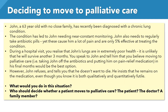Let's talk about an actual scenario. John, a 63-year-old with no close family, has recently been diagnosed with a chronic lung condition. The condition has led to near-constant monitoring and John also needs to regularly take antibiotic pills. However, these cause him a lot of pain and are only 5% effective at treating the actual condition. During a hospital visit you realise that John's lungs are in extremely poor health — it is unlikely that he will survive another three months. You speak to John and tell him that moving to palliative care — taking him off the antibiotics and putting him on pain relief medication — is in his best interests. However, John refuses and tells you that he doesn't want to die. He insists that he remains on the medication even though you know it is both qualitatively and quantitatively futile.